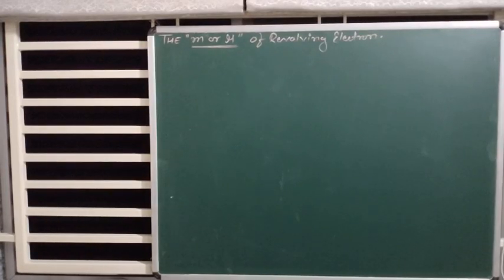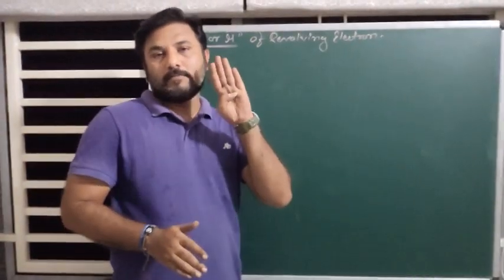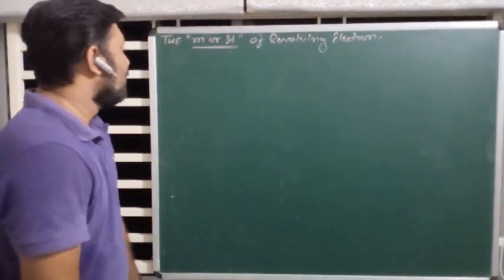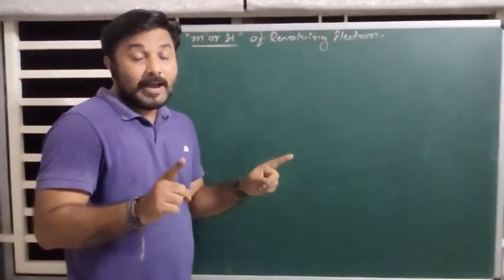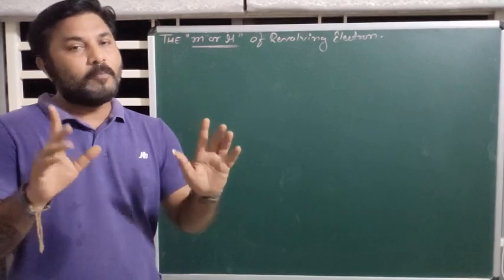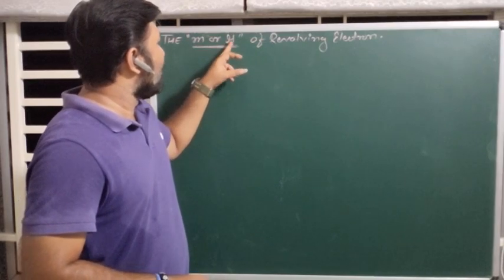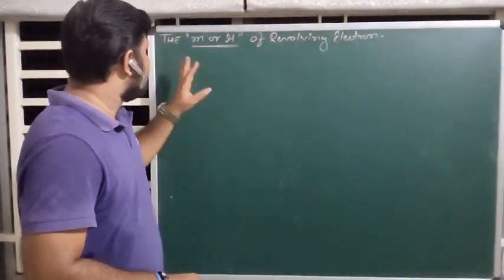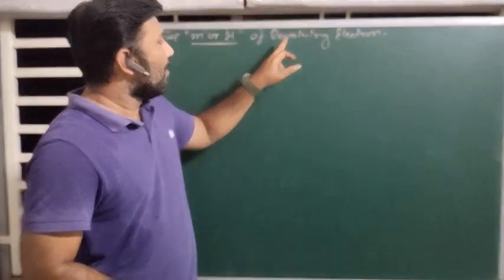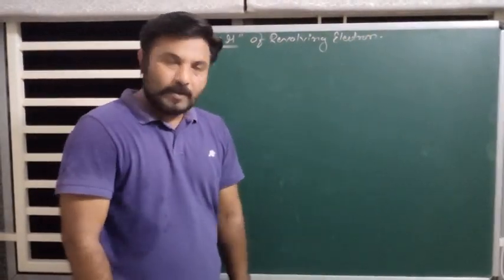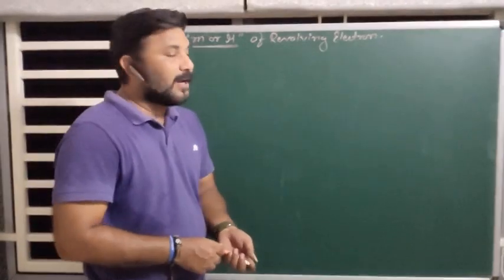Welcome back students. This is video number 31 of Chapter 4. In this video, we will see M — the magnetic dipole moment. In this topic, we will also use the symbol mu. The question is: obtain the equation of magnetic moment of revolving electron.